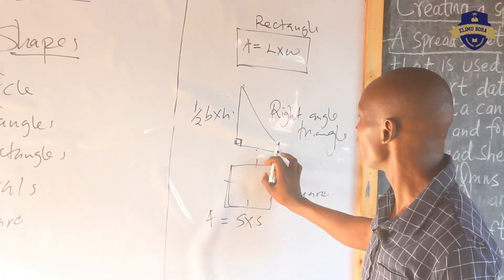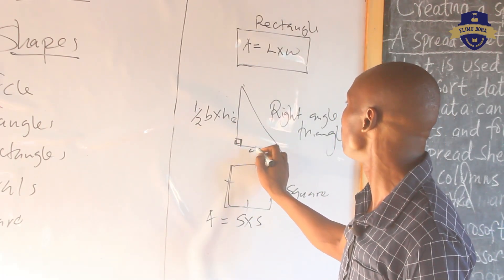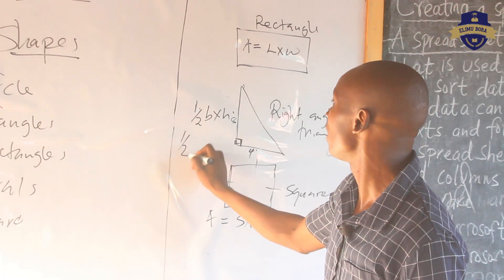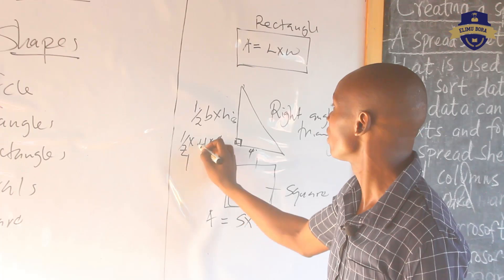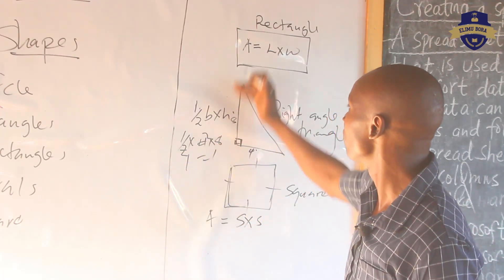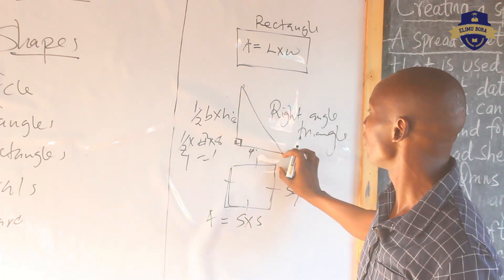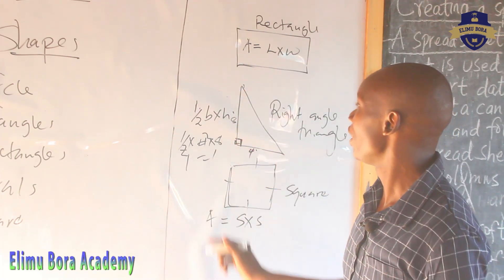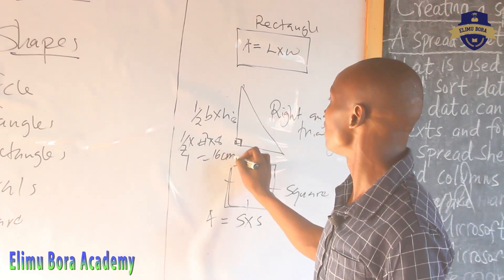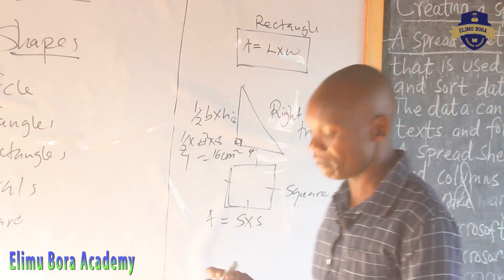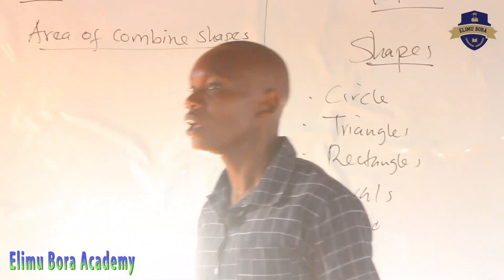If you are given a side of 4, you take 4 times 4 and get 16. If the height is 8 and base is 4, you use the formula of one half times base times height. The answer, if it is in centimeters, you write centimeters squared. In most cases, you give the area of any figure in square units.